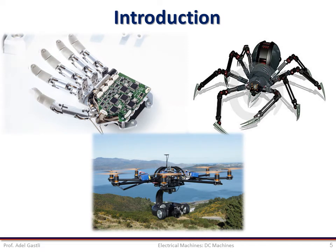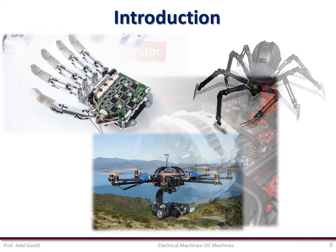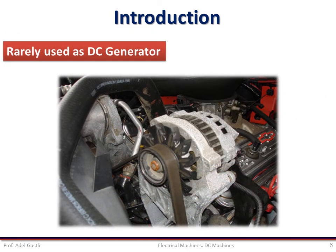Even though most electrical machines in service are of alternating current type, direct current machines are of considerable industrial importance. DC machines are mainly used as DC motors, and DC generators are nowadays rarely used, with few exceptions, such as alternators in cars.